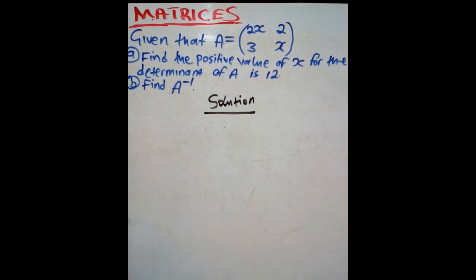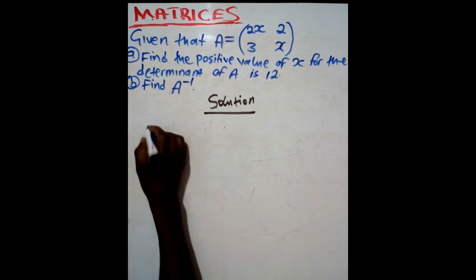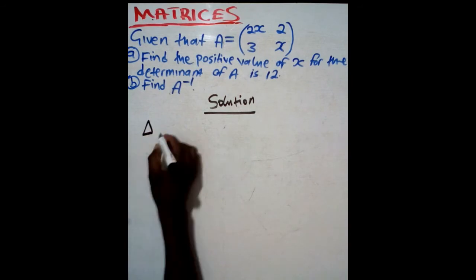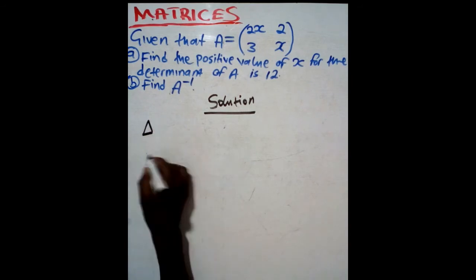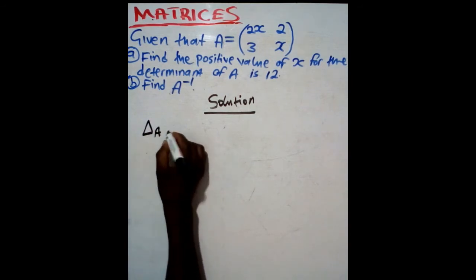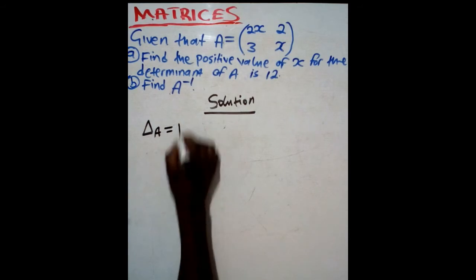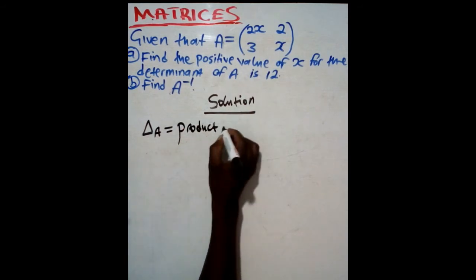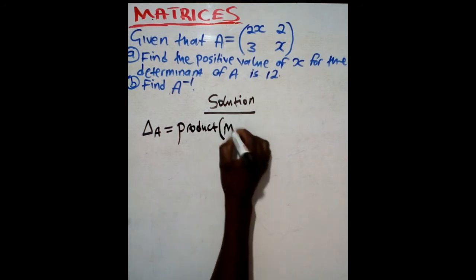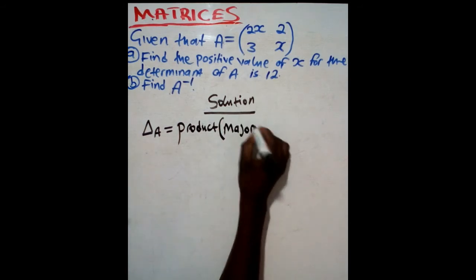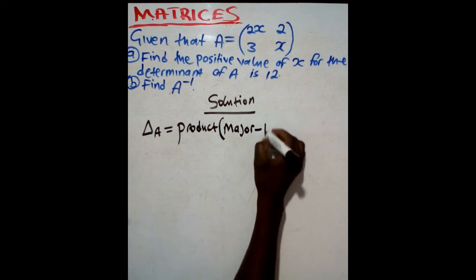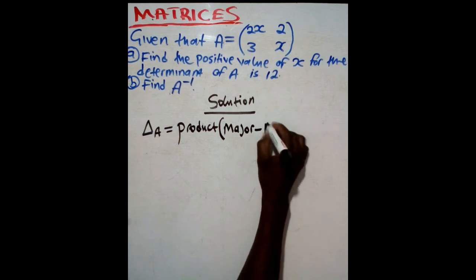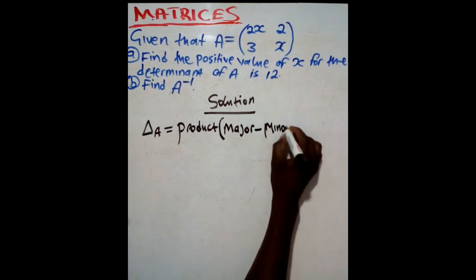First of all, you need to know the formula for finding the determinant of a 2 by 2 matrix. Determinant is also denoted by that symbol. The determinant of A is going to be equal to the product of the major diagonal minus the product of the minor diagonal.